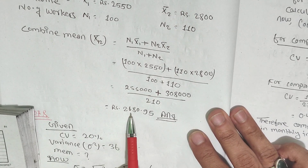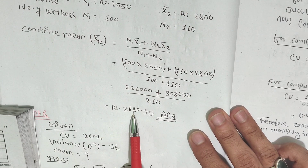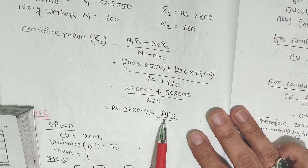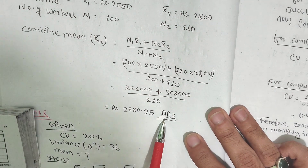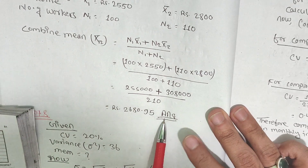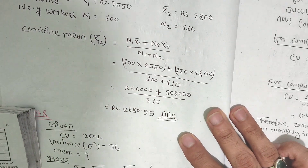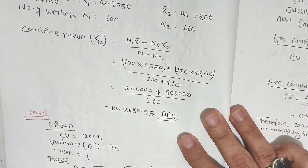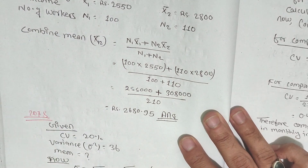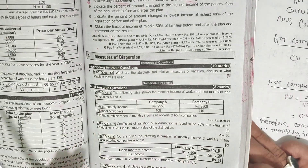The answer for the combined mean comes out to rupees 2680.95. So we have successfully calculated the combined mean.